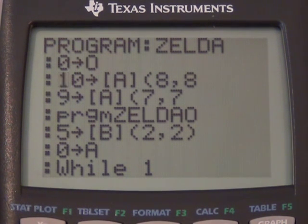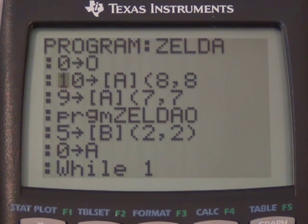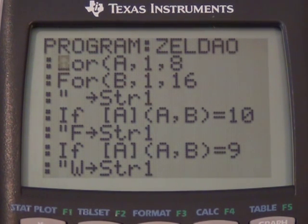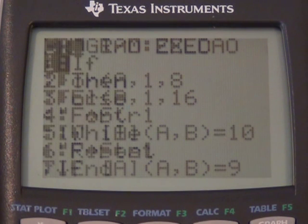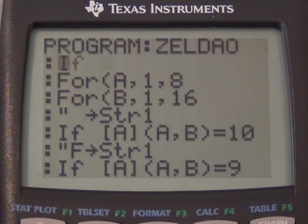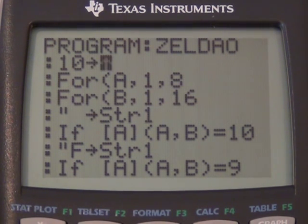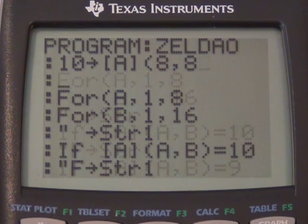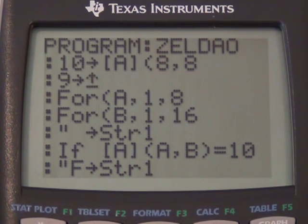10, 8, 8. And 9, 8, 7, 7. Okay, let's just copy that over here just so that we can replicate what we already have. So 10 store as matrix A, 8, 8. 9 at matrix A, 7, 7. Okay.